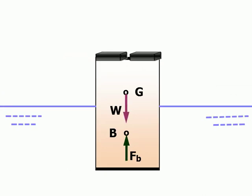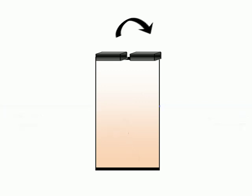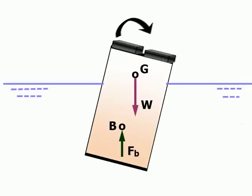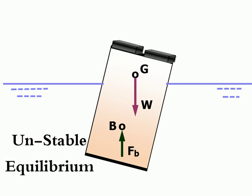However, for a relatively tall, slender body, a small rotational displacement can cause the buoyant force and the weight to form an overturning couple, which will rotate the body.